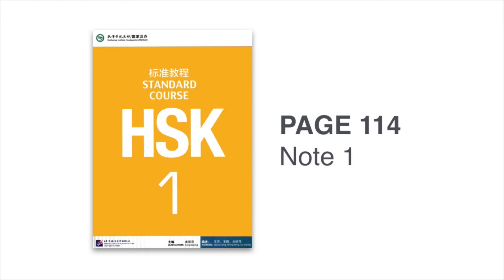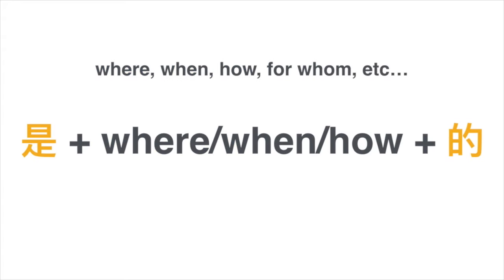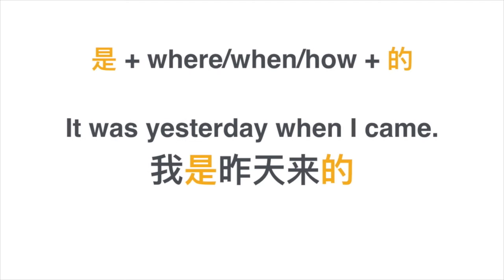Please turn your textbook to page 114 and let's take a look at grammar point number one. To ask for specific information about the past, you use this grammatical construction: 是 + [specific information] + 的. For example, 'it was yesterday when I came' is 是昨天来的. 昨天 means yesterday, 来 means come, so 昨天来 is 'come yesterday' — that's the piece of information you're focusing on.